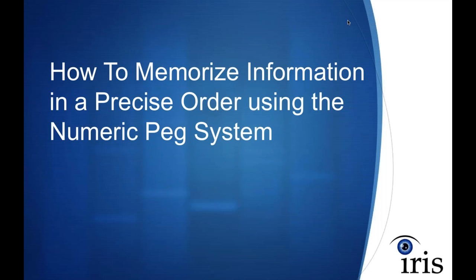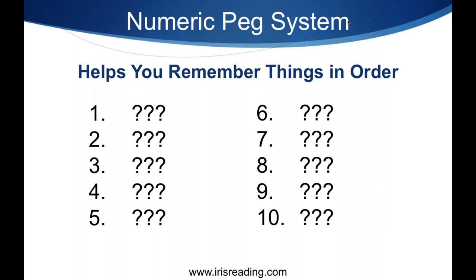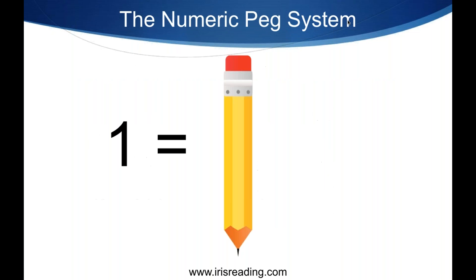Let's utilize some of that information. I want to discuss a memory technique that can help you remember things in a precise order. If you need to remember things — let's say you have 10 things that have to be remembered as step one, step two, step three — maybe it's a certain kind of process. Whatever it happens to be, the numeric peg system is a technique that will help you remember things in a very precise order.